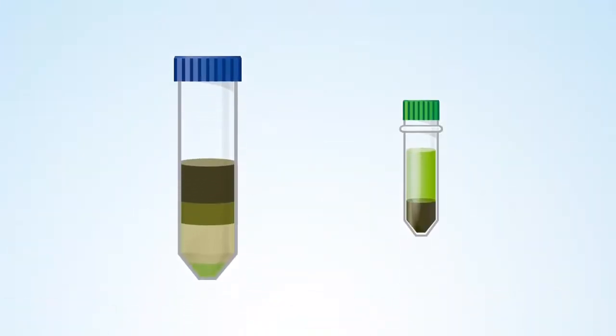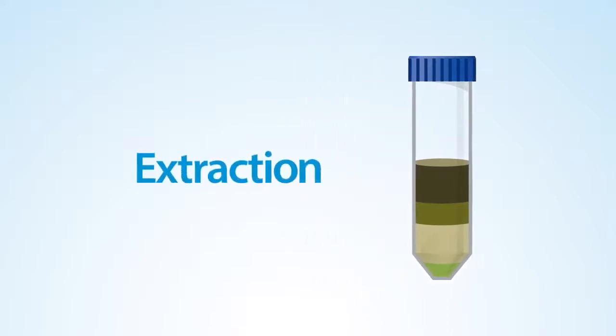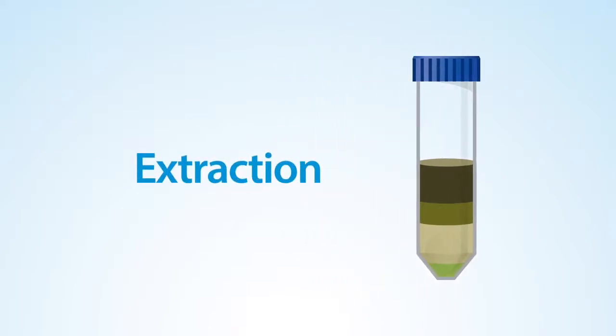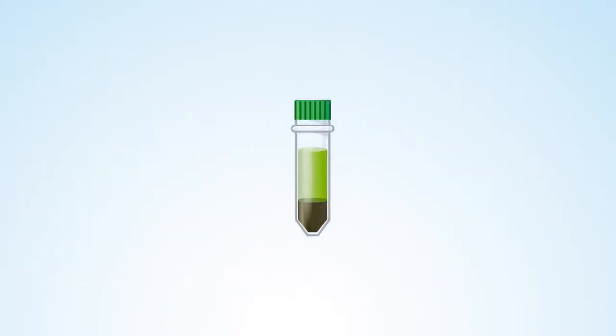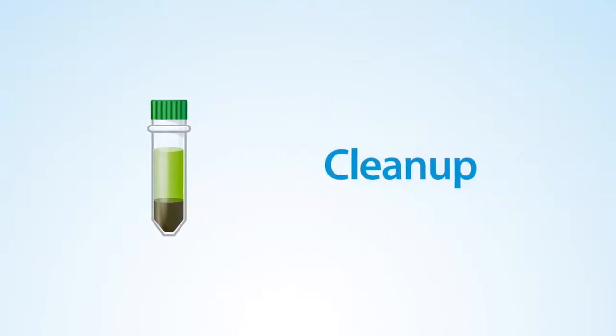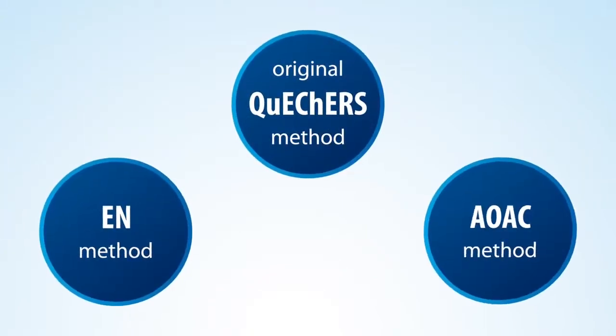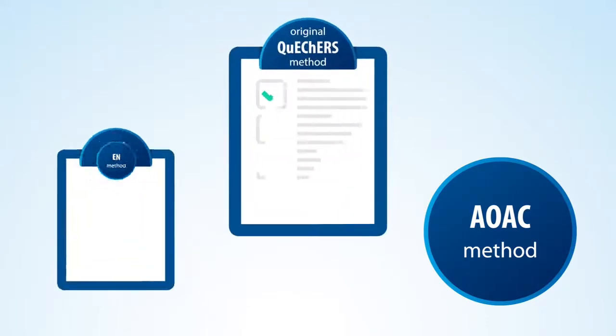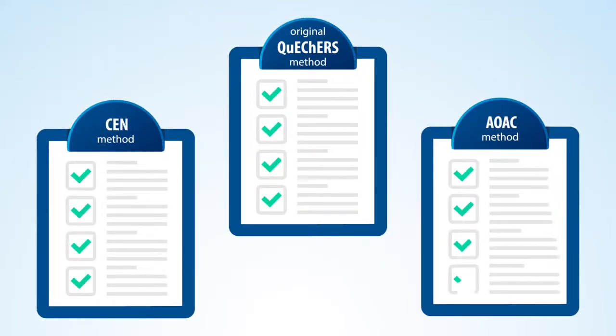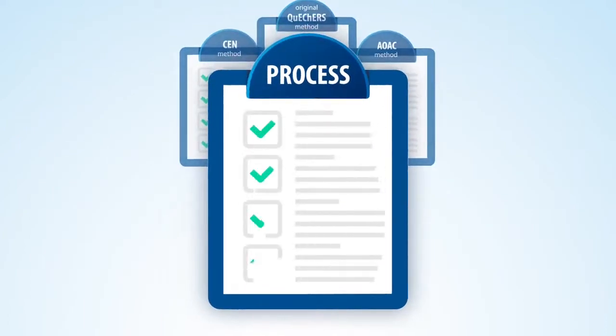QuEChERS can primarily be thought of as a two-step process. The first step is extraction, where analytes of interest are extracted from your sample. And the second step is cleanup, where many potential interferences are removed from the extract. A variety of QuEChERS methods exist to help ensure the efficient extraction of different types of compounds. While these methods vary in specific procedure, the general QuEChERS process follows the same path.